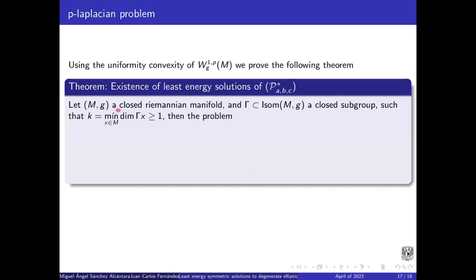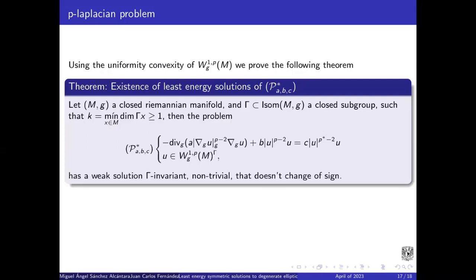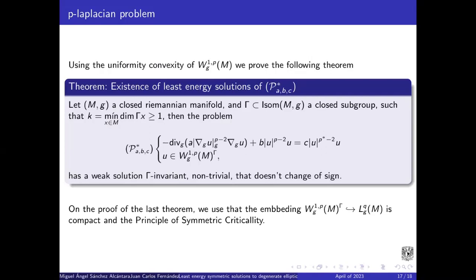Let (M,g) be a closed Riemannian manifold, Gamma a closed subgroup of isometries, such that k equals the minimum dimension of the Gamma orbit is bigger or equal than one. Then, this problem has a weak solution, Gamma invariant, not trivial, that doesn't change of sign. And on the proof of this theorem, we use that this embedding is compact and the principle of symmetric criticality.